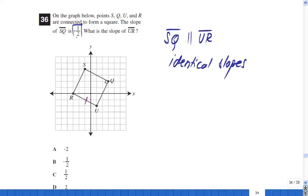What is the slope of SQ? Negative one half. What would be the slope of UR? Negative one half. And that's why the answer is B.